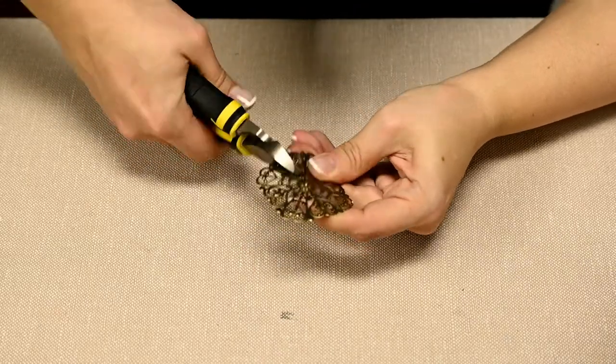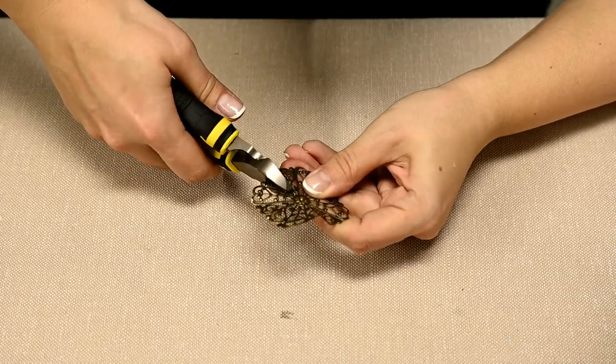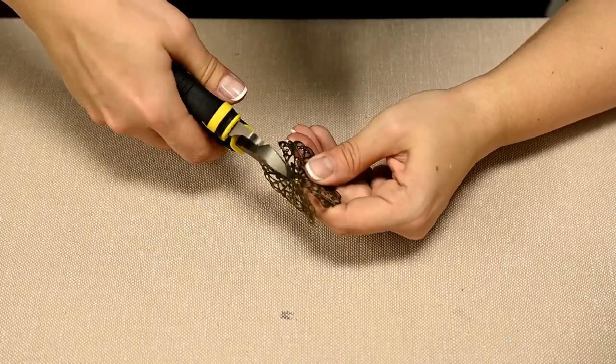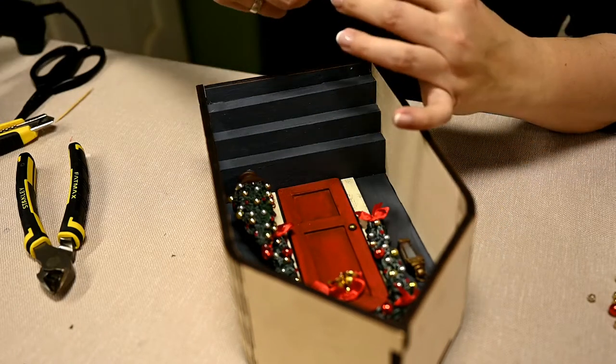At this moment I found a filigree and thought it would make a great doormat. I cut it in half with pliers and hot glue to the entry. You can also use a piece of nice lace for same purpose.